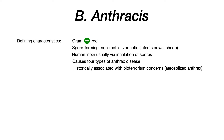Human infection usually occurs via inhalation of the bacterial spores. There are four types of anthrax disease, which I'll get into individually later. Historically, Bacillus anthracis was associated with bioterrorism — the concern being that a government might use aerosolized anthrax, package it, and send it out to infect the widespread public. So this bacteria tends to be a bit better known than others.